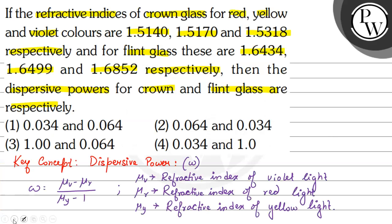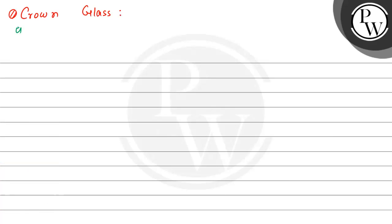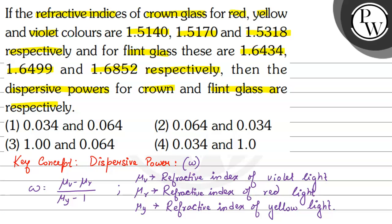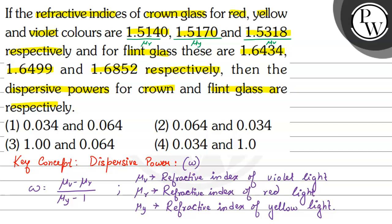First, let us find out the dispersive power for crown glass. For crown glass, the refractive indices are given: red is 1.5140 — this is mu_r; yellow is 1.5170 — this is mu_y; and violet is 1.5318 — this is mu_v. So mu_v is 1.5318 and mu_r is 1.5140.